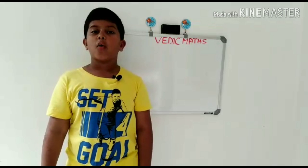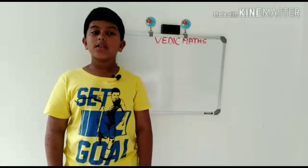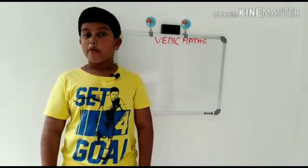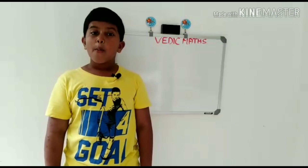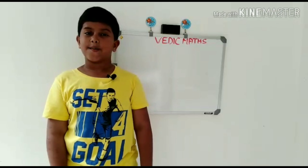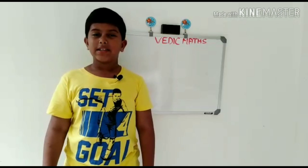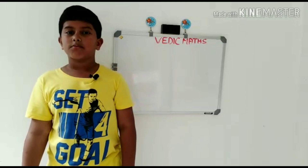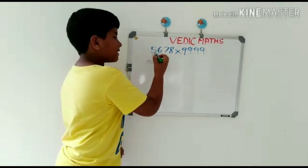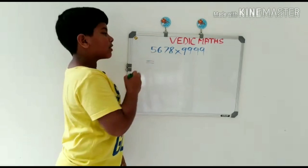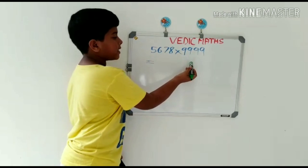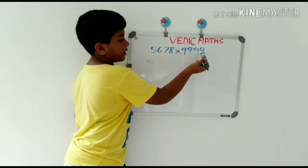In this video, we are gonna learn some Vedic Math techniques which makes multiplication by 9 very easy. I'll give a problem — try to do it in three to five seconds: 1678 multiplied by 9999.